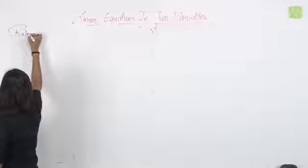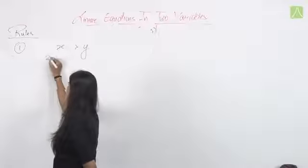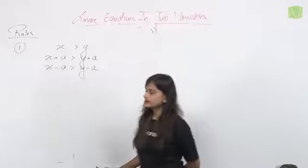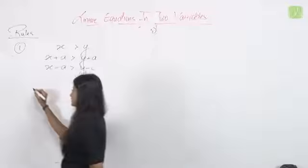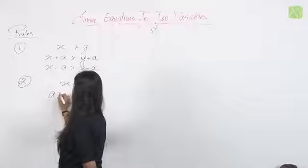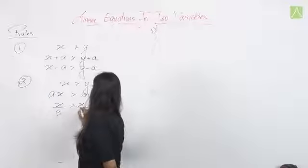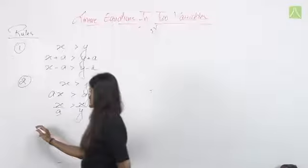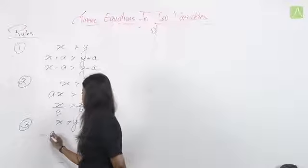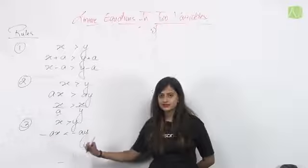Formally: if x > y, then x + a > y + a and x − a > y − a. Addition and subtraction do not change the inequality. For multiplication: if x > y and we multiply by a positive quantity a, then ax > ay and x/a > y/a. But if we multiply by a negative quantity, the sign reverses: −x < −y.